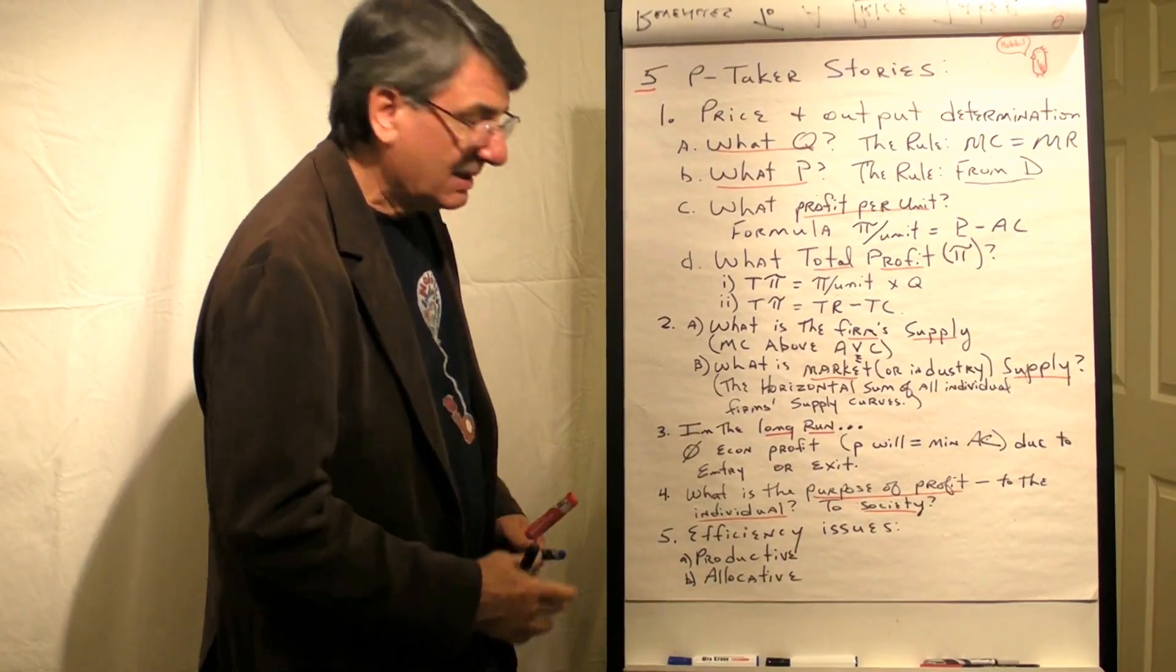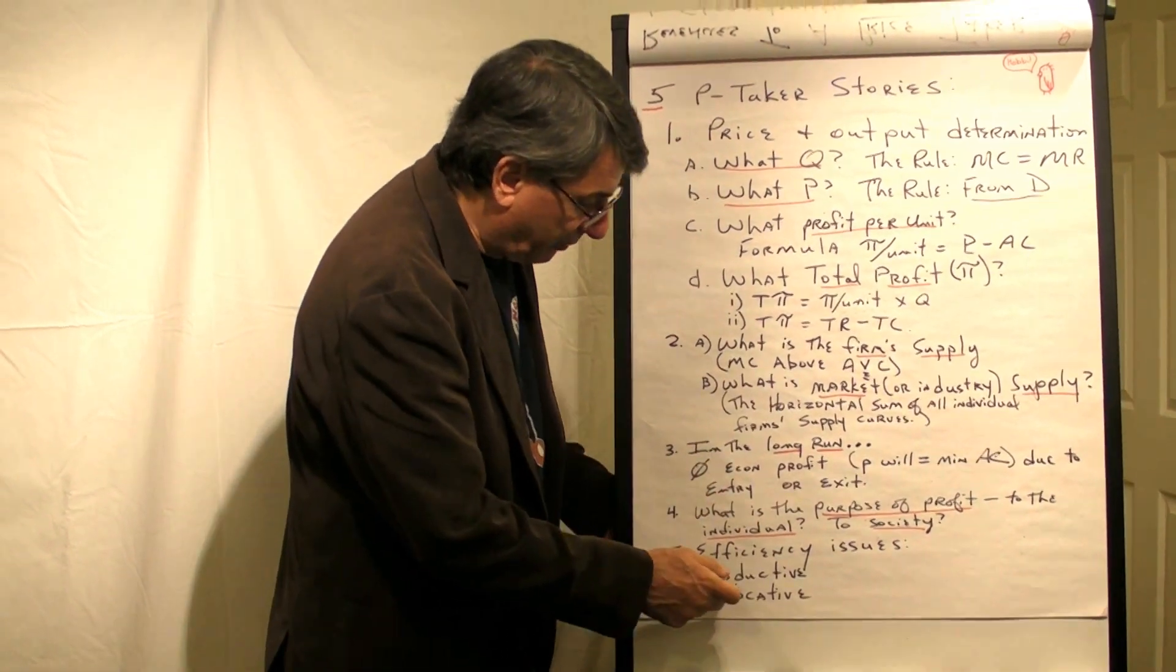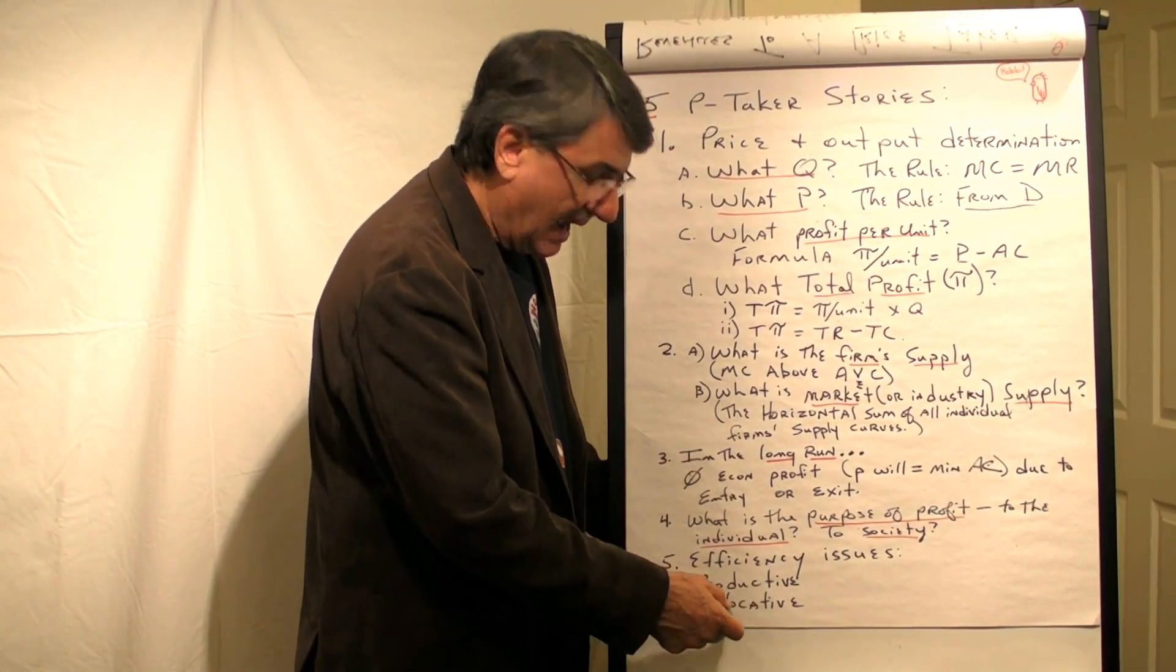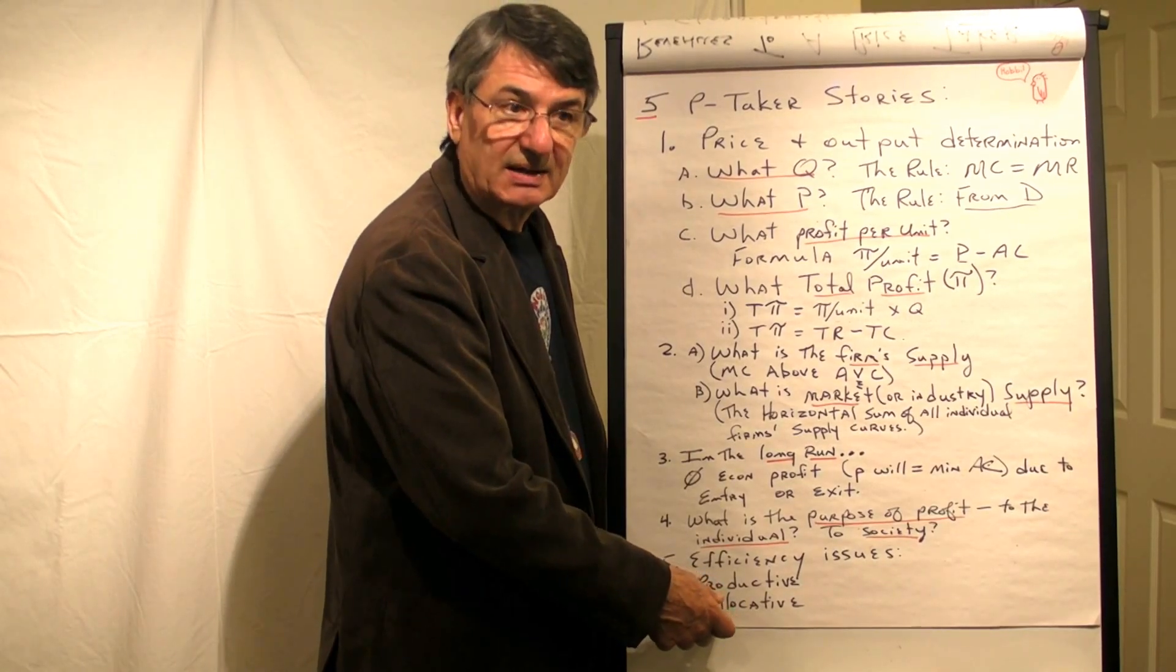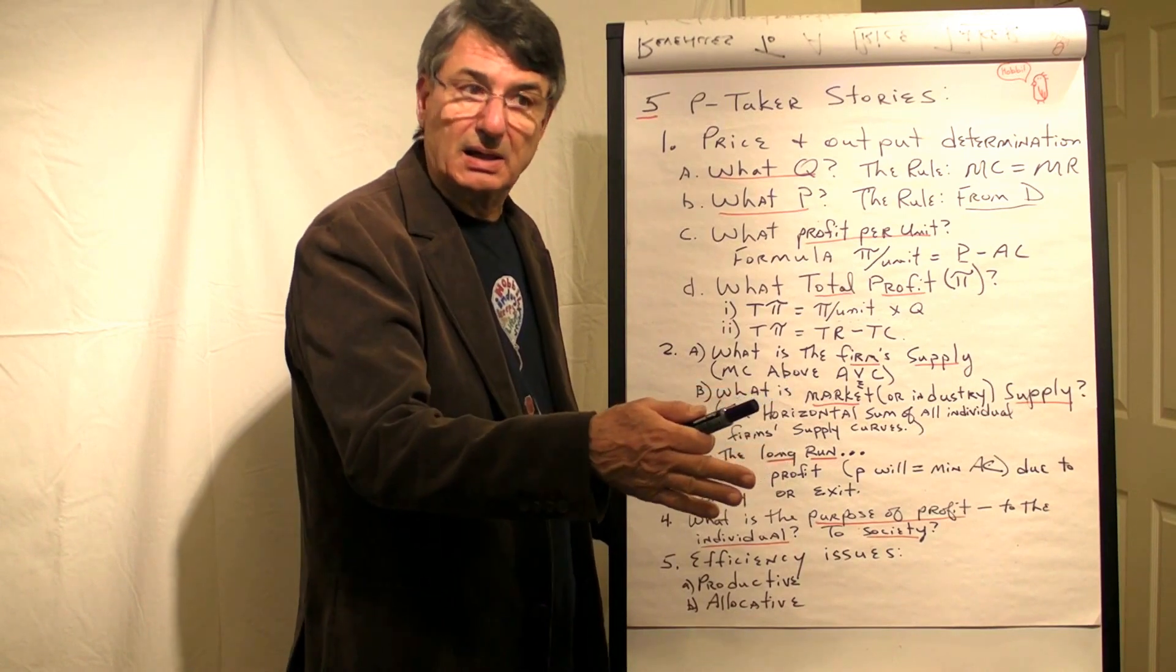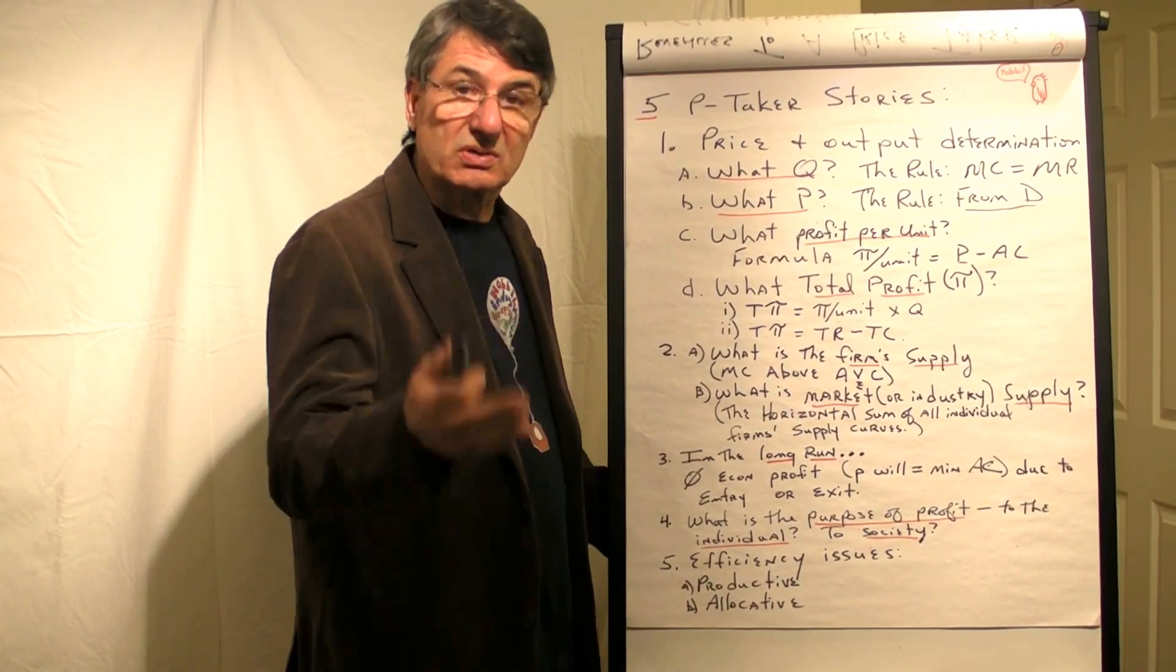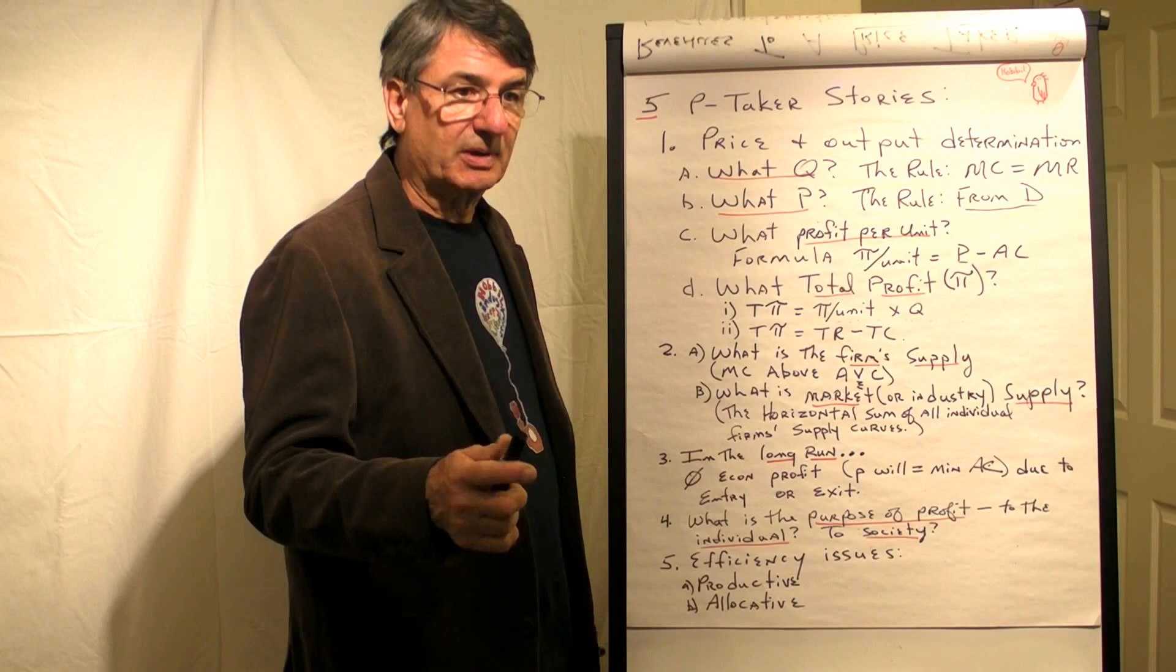The fifth story deals with efficiency issues. We're going to look at both productive efficiency, producing goods with the lowest resource costs, and allocative efficiency, putting resources into the correct areas. Not too much in one area, not too little, but just right. To maximize the well-being of society by allocating resources optimally.